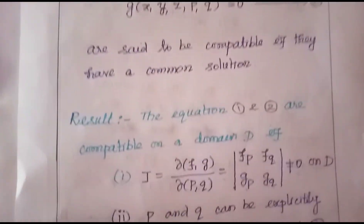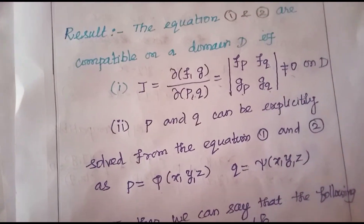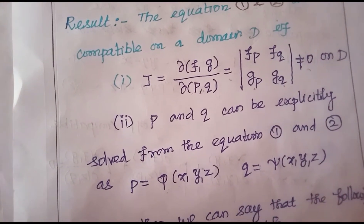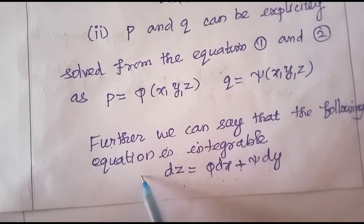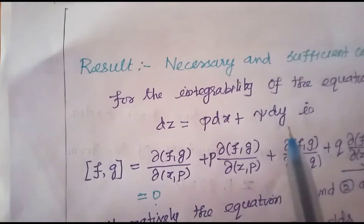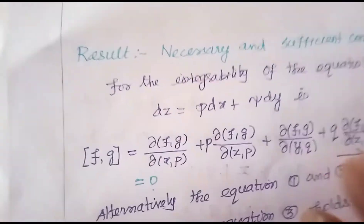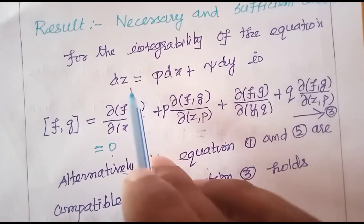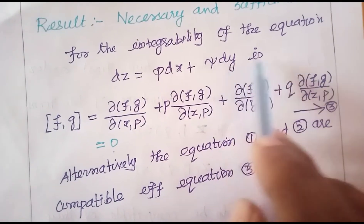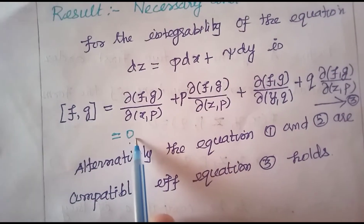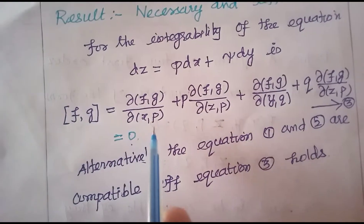From equations 1 and 2 we derive π and ψ. Further, the following equation is integrable: dz = π dx + ψ dy. The necessary and sufficient condition for the integrability of dz = π dx + ψ dy is [f, g] = 0, meaning the Jacobian condition equals zero.